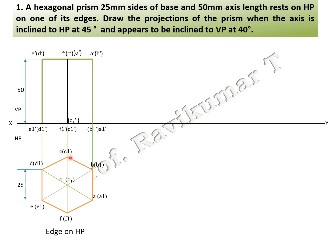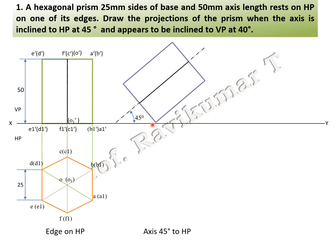This is the first position of the hexagonal prism. The next position: the axis is inclined to HP at 45 degrees. Take the object and place it, then rotate it to 45 degrees. The same naming will be copied here — this rotation is with the help of 45-degree inclination with HP.